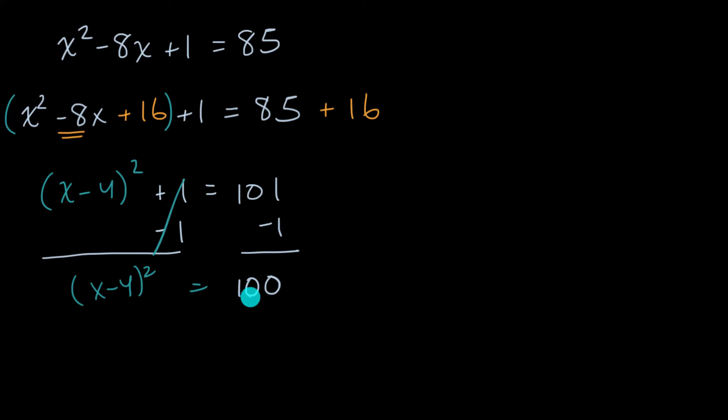Now if something squared is equal to 100, that means that the something is equal to the positive or the negative square root of 100. Or that that something, x minus four, is equal to positive or negative 10. All I did is took the plus or minus square root of 100.